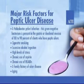Peptic ulcers can develop at any age, but duodenal ulcers first develop between the ages of 30 and 50, while gastric ulcers are more common in people over age 60. Duodenal ulcers are found more often in men than in women, whereas gastric ulcers are more common in women than in men.